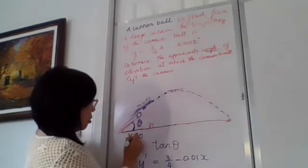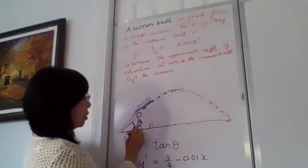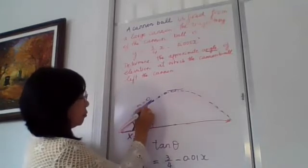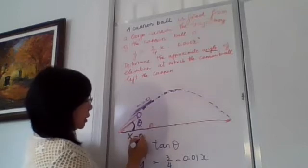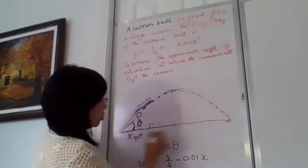So the distance horizontally here, when the bullet left the cannon is zero. So let x be the distance of the ball traveling, right?